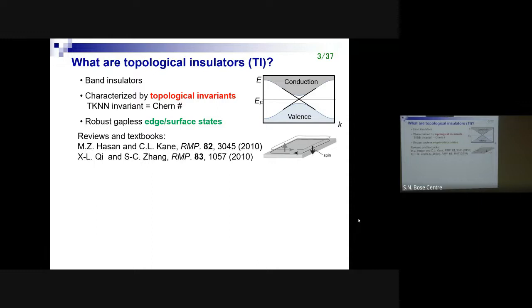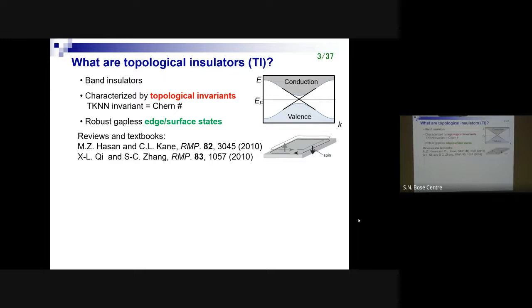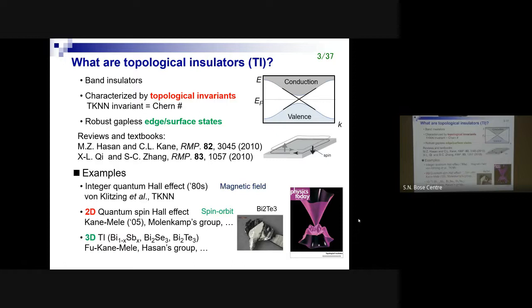In topological insulators, you have robust gapless edge or surface states, protected by topological invariants. Topological insulators are already a kind of old subject, and there are many reviews and textbooks about them, including famous reviews in Reviews of Modern Physics. What is interesting is that these are not just theoretical toy models — there are many experimental realizations in nature.